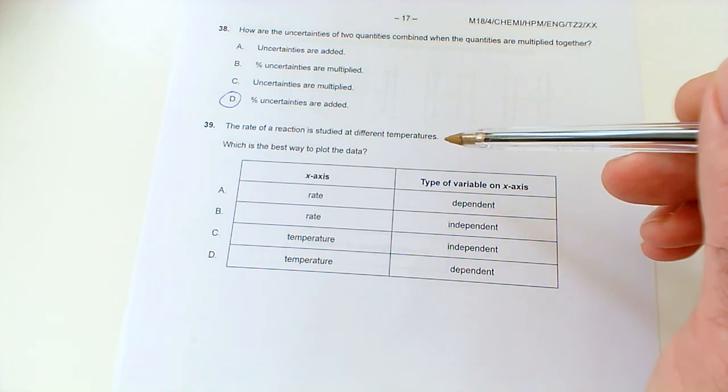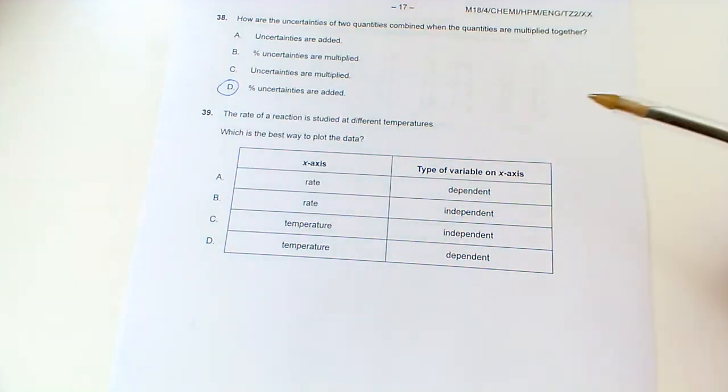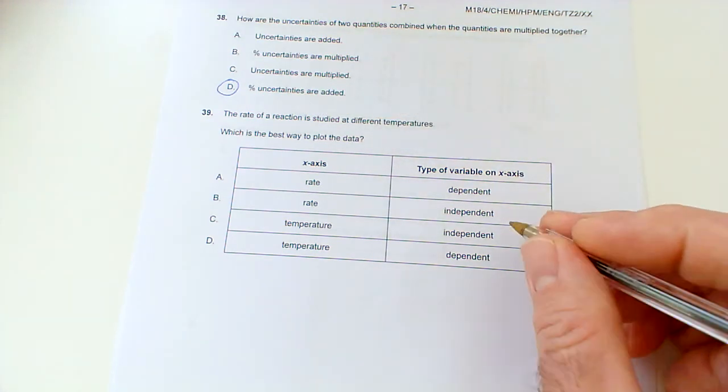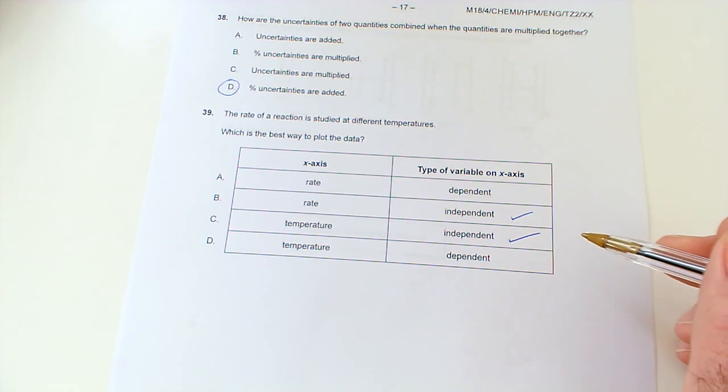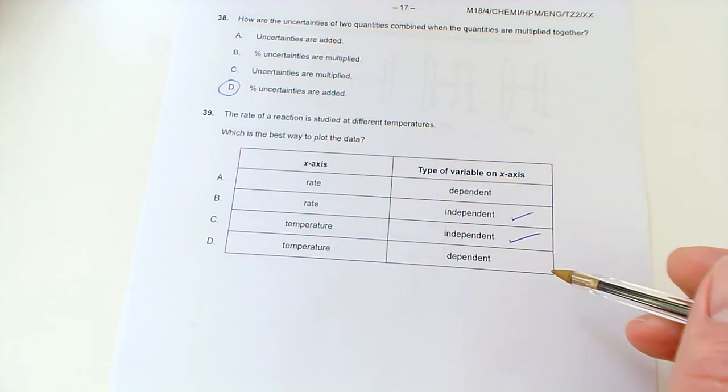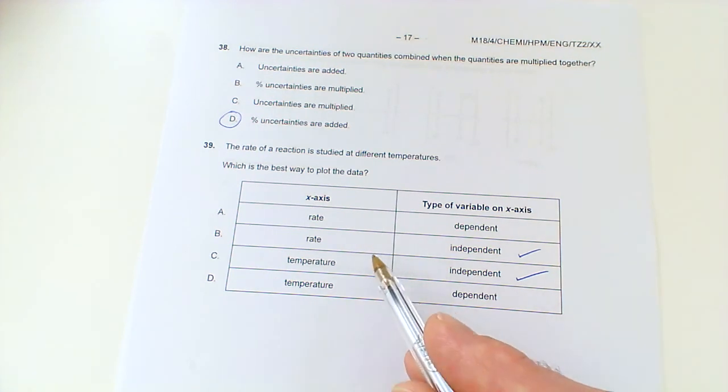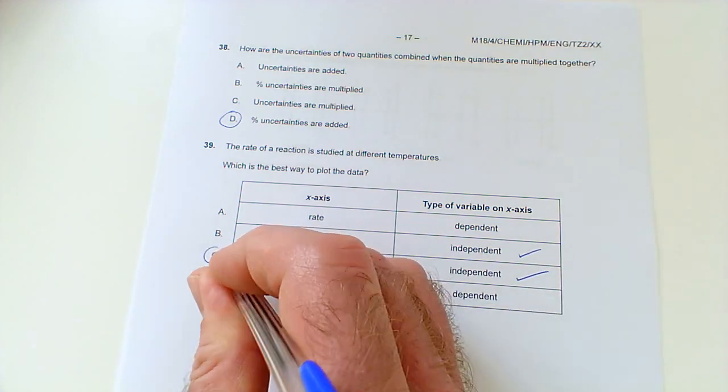39, the rate of a reaction is studied at different temperatures, which is the best way to plot the data. Well, if we're changing temperature and measuring rate, well, if we're changing temperature, then temperature is our independent variable, and independent variables would go on the x-axis. So, our independent variable would be the temperature, because that's what we would be changing. Okay, so you always put the independent variable on the x-axis, dependent on the y, and we're changing temperature, measuring rate. So, it would be C.